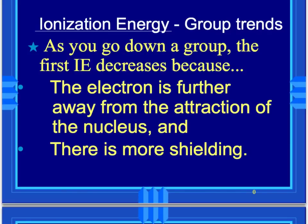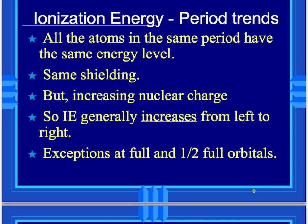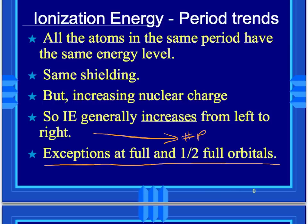When looking at ionization group trends, as you go down a group the first ionization energy decreases because the electron is further away from the nucleus and there's more shielding — more energy shells are added. For period trends, all atoms in the same period have the same energy level and the same shielding, but increasing nuclear charge means ionization energy generally increases left to right. However, there are exceptions due to filled and half-filled orbitals, which we also saw when writing electron configurations.